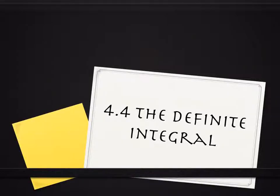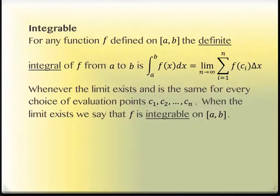Section 4.4 is called the definite integral. What we're going to see happen today is putting numbers on top of these script S's that you've been using. The next section, 4.5, will connect that notation with what this section does and what you've done back in 4.1. To start with, we're going to define the word integrable. For any function f defined on the interval from a to b, the definite integral of f is this notation where you have the script S.